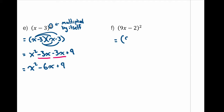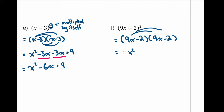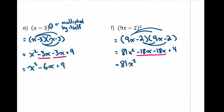Example (f): (9x − 2) squared — identical idea, just different numbers. (9x − 2)² = (9x − 2)(9x − 2). FOIL gives: 9x times 9x = 81x squared; 9x times negative 2 = negative 18x; negative 2 times 9x = negative 18x; negative 2 times negative 2 = positive 4. Combining the two middle terms: 81x² − 36x + 4.